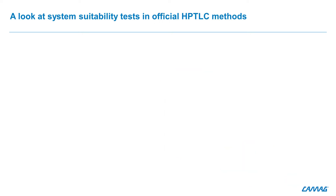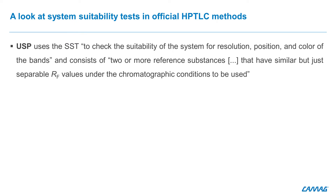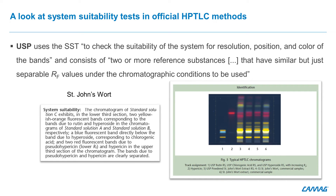When we look at the system suitability test in official HPTLC methods, the USP uses the SST to check the suitability of the system for resolution, position and color of the band, and consists of two or more reference substances that have similar but just separable RF values under the chromatographic conditions to be used. Here is the example of St. John's Wort.